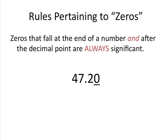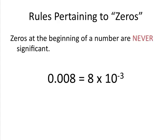Zeros that fall at the end of a number and after the decimal point are always significant. Zeros at the beginning of a number, however, are never significant.